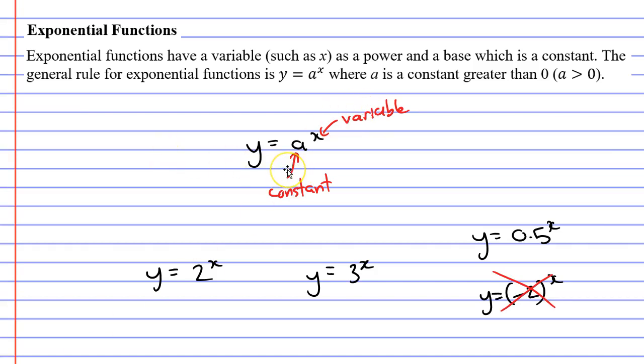I would also like to remind you that we don't always have to use y and x. An exponential function might look similar to this. It might be capital D equals 3.4 to the power of t. This still follows the rule because our base is a constant and our power is a variable or letter from the alphabet.